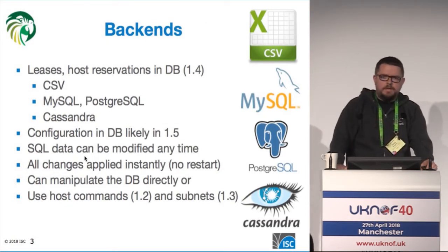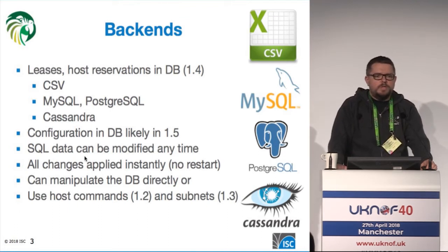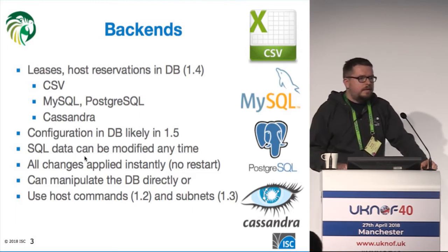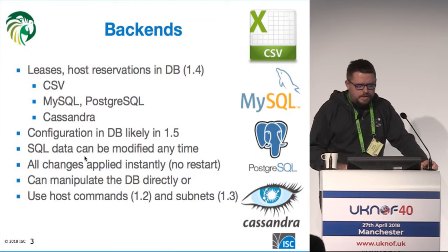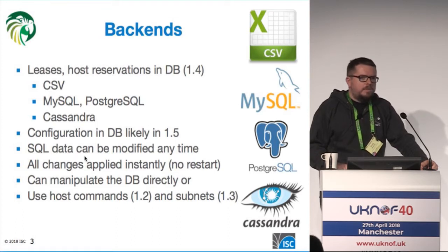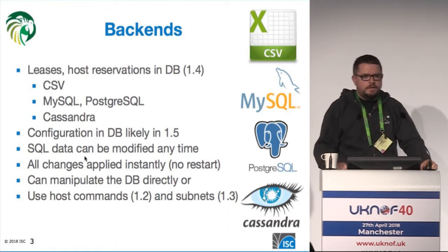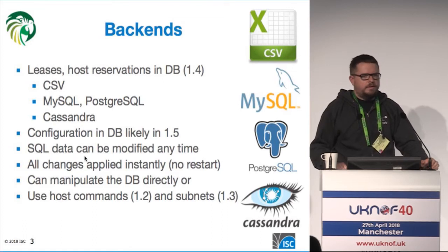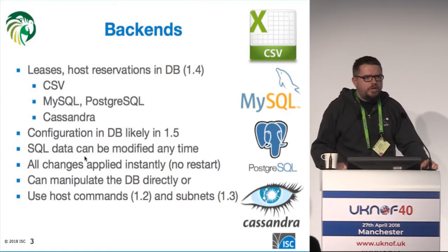Let's start with backends. Kea has the ability to use different databases. If you want to go small, you can use an in-memory database and then store the information in a plain CSV file. But if you want to go bigger, you can use MySQL or Postgres, and we now have support for Cassandra. What's nice about this approach is that Kea does everything on the fly, so you can modify the backend and there's no need to notify Kea — it will pick up the changes instantly.